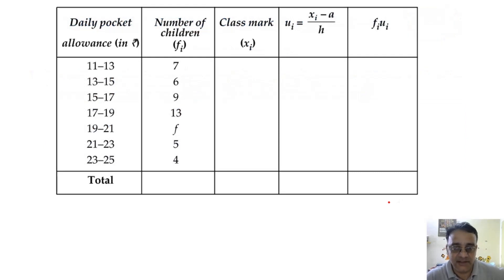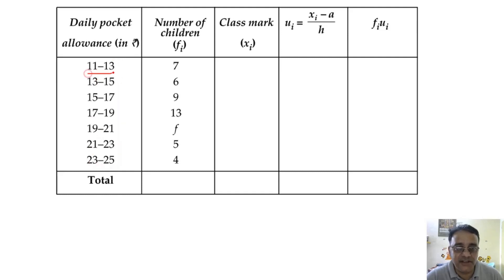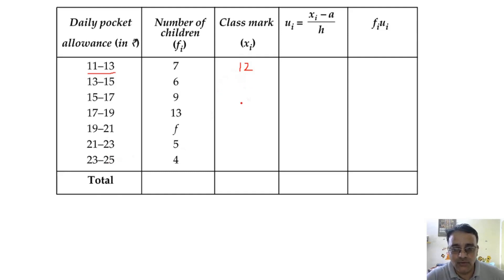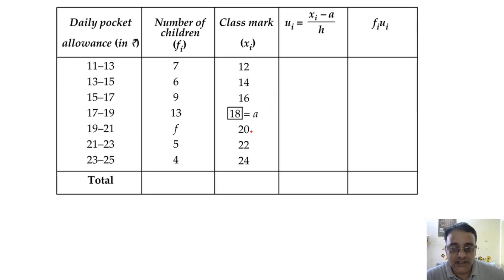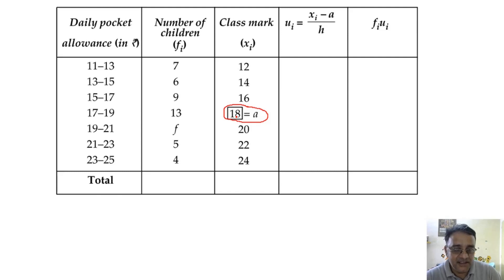I'm using a step deviation method. So first of all, we have to find the class mark. The class size is 2. The class mark of the first class interval is 12. We'll keep adding 2 consecutively: 12, 14, 16, 18, 20, 22, 24. Now we are going to assume 18, which is the middle term here.